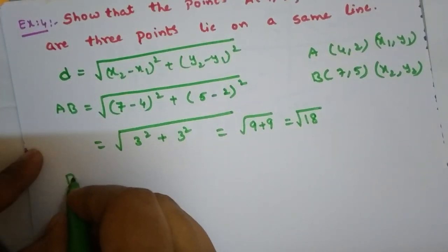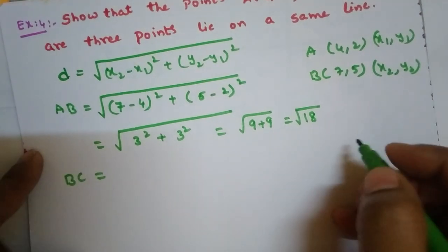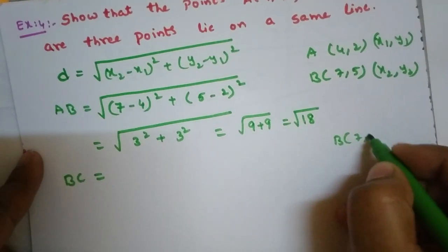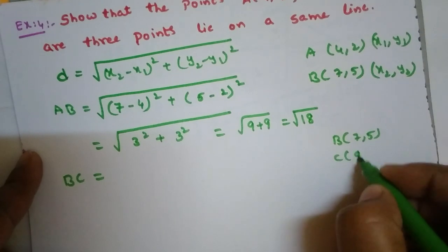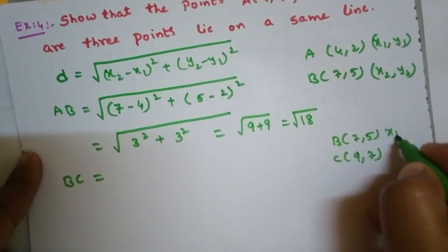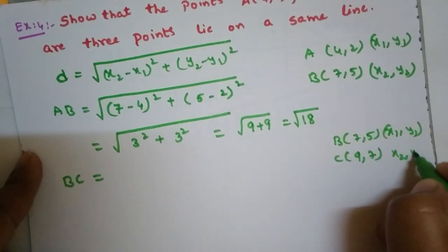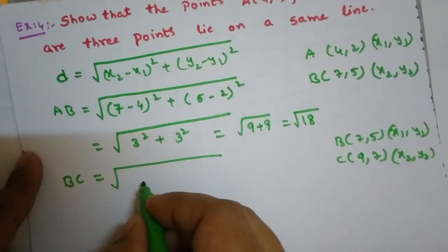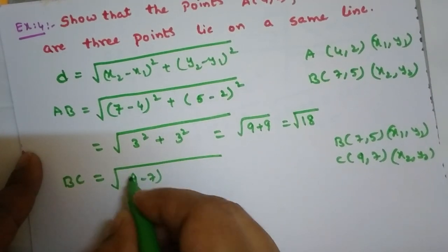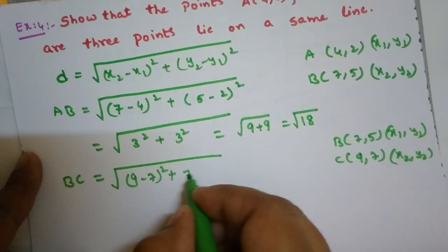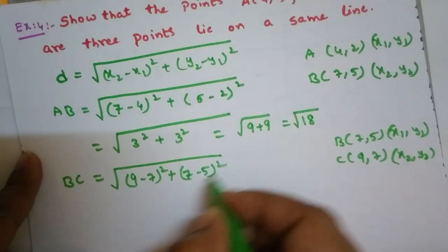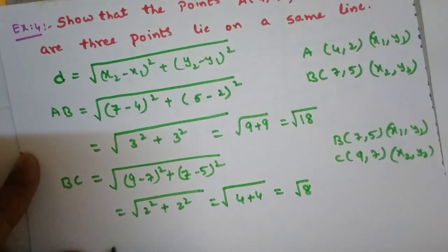Now BC distance. BC equals B(7,5), C(9,7). x1, y1, x2, y2. Square root of (9 minus 7) whole square plus (7 minus 5) whole square, that equals root 8.